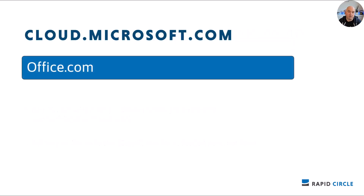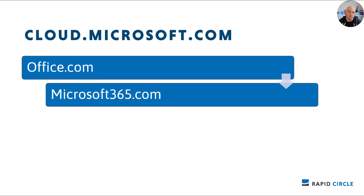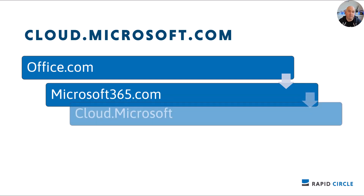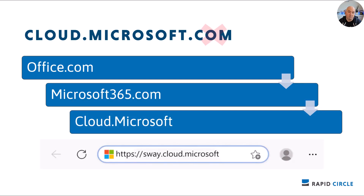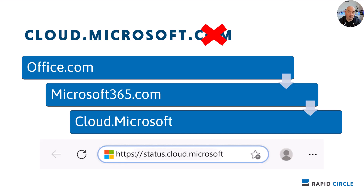It went from office.com to Microsoft365.com, but now Microsoft has its own top-level domain name — effectively the equivalent of .com or .org. So now they have .Microsoft, and starting from May you will start to see cloud.Microsoft for various Microsoft 365 apps and services. This is going to be a little bit confusing, as you'd be expecting something like blah.com, but no — it's going to be things like sway.cloud.microsoft. So it's going to take a little bit of getting used to.